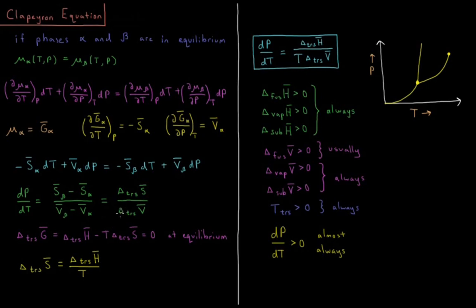We can take this a bit further. We know that the Gibbs energy equals enthalpy minus temperature times entropy, so the transition molar Gibbs energy equals the molar enthalpy of transition minus temperature times the molar entropy of transition. At equilibrium — at any point on the coexistence curve — the Gibbs energy of the two phases is equal, so the Gibbs energy change during a phase transition is zero. Therefore, delta_trans H̄ minus T·delta_trans S̄ equals zero, giving us: the molar entropy of transition equals the molar enthalpy of transition divided by temperature.